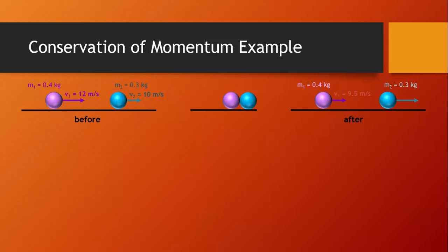Because of the collision, the purple ball slows down to only 9.5 meters per second. What we want to figure out is how fast the blue ball is moving after the collision.